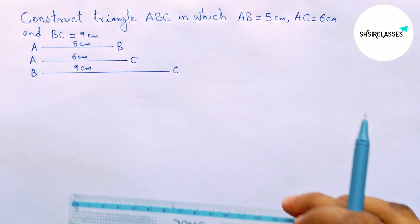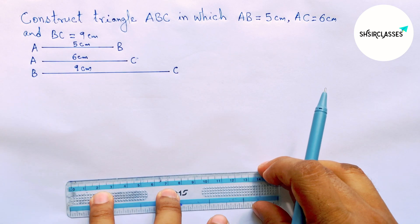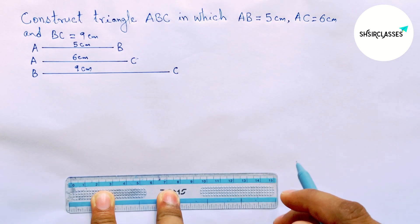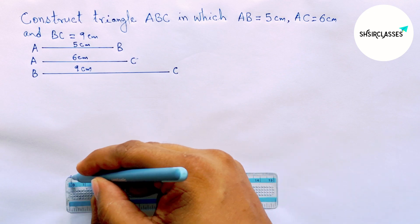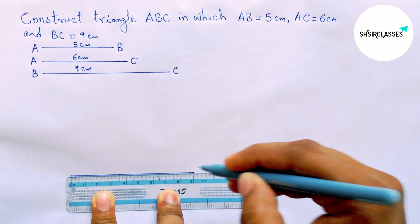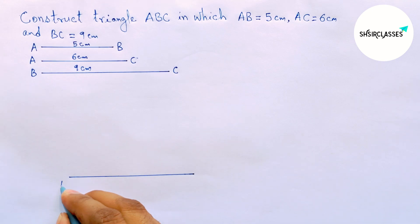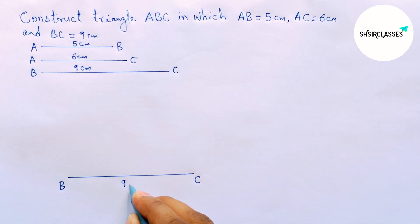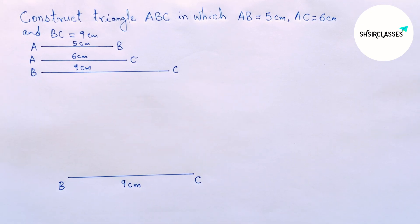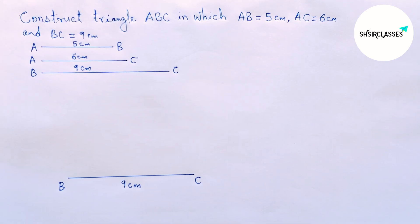Okay, now again drawing here a line segment of length nine centimeter. So here this is nine. Perfect, so labeling here B and C, BC equals nine centimeter. Next measuring the length AB equal five centimeter with the help of compass.